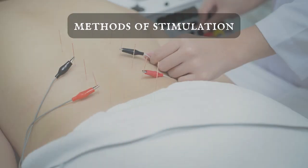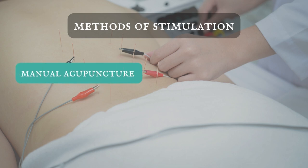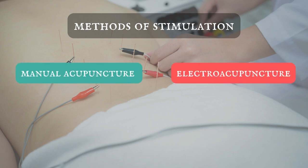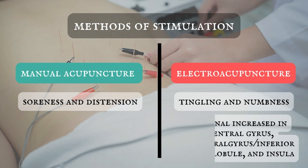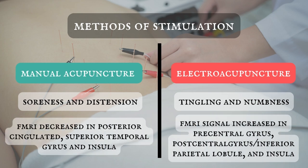Now we're moving on to methods of stimulation. Stimulation method is another factor that affects De Qi. Some studies compare the difference of De Qi sensation and physiological responses caused by manual acupuncture and electroacupuncture. The results show that the sensations of manual acupuncture on He Gu were mainly soreness and distension, while those of electroacupuncture were mainly tingling and numbness. This research also found that there were significant differences in fMRI signals in different brain regions between the two methods. Therefore, different brain mechanisms may be involved with different methods of stimulation.